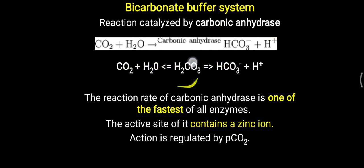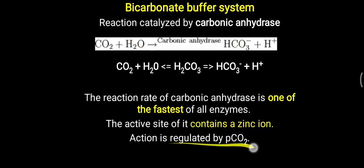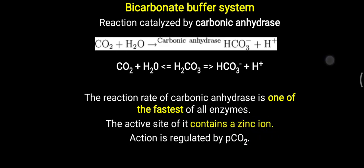Carbonic anhydrase converts CO₂ and water into carbonic acid and bicarbonate ion, and this reaction rate is one of the fastest of all enzyme activities. Zinc ion is required for this enzyme activity. This action is also under the control of the partial pressure of carbon dioxide (pCO₂). So for the bicarbonate buffer system, remember carbonic anhydrase, which is under the effect of pCO₂ and requires zinc ion.